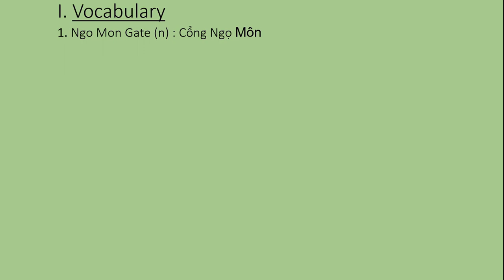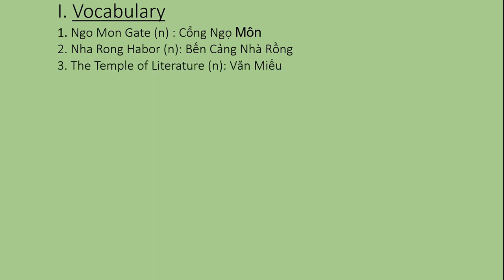Number two: Nhà Rồng Harbor - Bến Cảng Nhà Rồng. Number three: The Temple of Literature - Văn Miếu. Number four: Hạ Long Bay - Vịnh Hạ Long. And number five: Crop - đó là một danh từ, có nghĩa là vụ mùa.